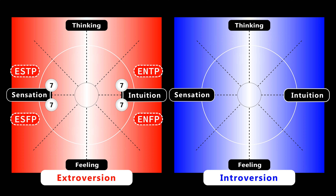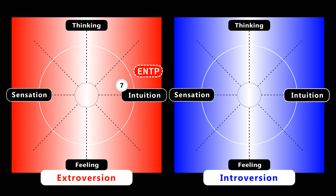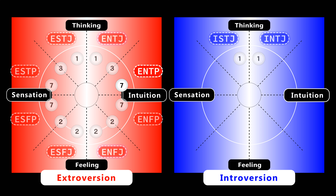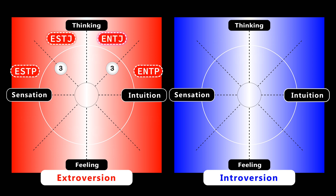Extroverted sensation tends to focus on the immediate stimulus to the five senses. On the other hand, extroverted intuition tends to focus on new possibilities for the future. Therefore, for example, ENTP is called the inventor. Leonardo da Vinci, for example, is considered to be ENTP. Also, he is considered to be Type 7. Type 3 tends to be ESTP, ESTJ, ENTJ, or ENTP. As we can see, Type 3 is the combination of the judging type and the perceiving type, but as already discussed, Type 3 is slightly leaning toward the judging type.